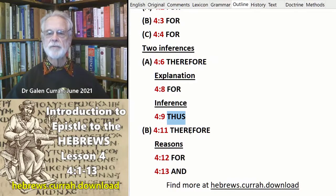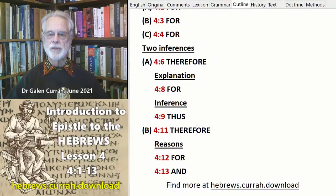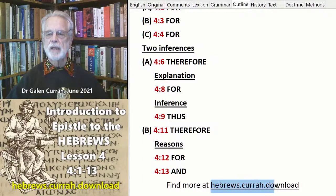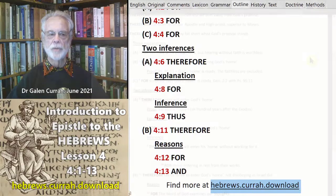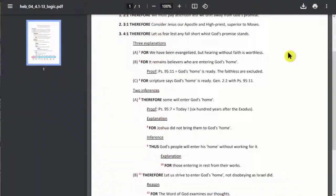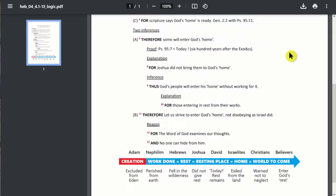The second great inference in verse 11 is followed by two reasons — one introduced by 'for' and the other by 'and.' For a fuller account of this logic, see the website hebrews.curragh.download. Here we have the same logical analysis, followed by content and a summary chart.